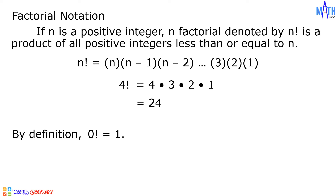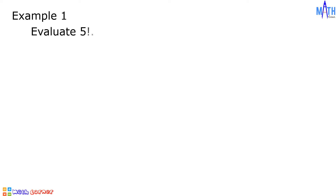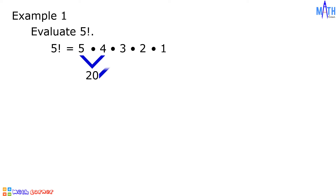Let us have some examples. Example number 1: evaluate 5 factorial. 5 factorial is equal to 5 times 4 times 3 times 2 times 1. 5 times 4 is 20, 20 times 3 is 60, 60 times 2 is 120, and 120 times 1 is 120. Therefore, 5 factorial is equal to 120.